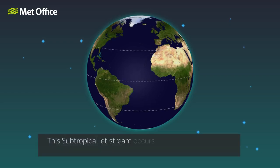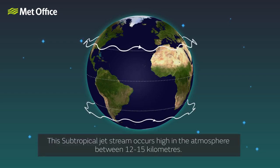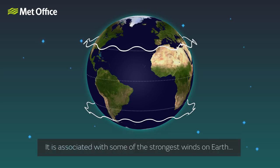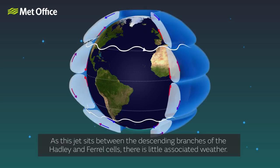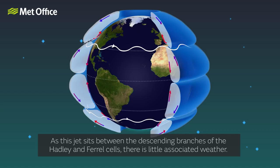This subtropical jet stream occurs high in the atmosphere between 12 to 15 kilometres. It is associated with some of the strongest winds on Earth, reaching over 280 miles per hour at times. As this jet sits between the descending branches of the Hadley and Ferrell cells, there is little associated weather.